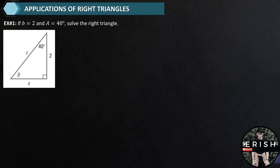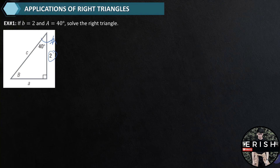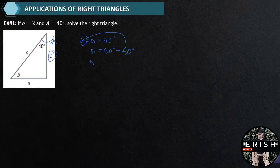Example number 1: if B is equal to 2 and angle A is equal to 40 degrees, solve the right triangle. When we say solve the right triangle, we are going to find all the missing sides and angles. Since angle A is 40 degrees, using the principle that A plus B equals 90 degrees, angle B is equal to 90 degrees minus 40 degrees, which gives us B equal to 50 degrees.